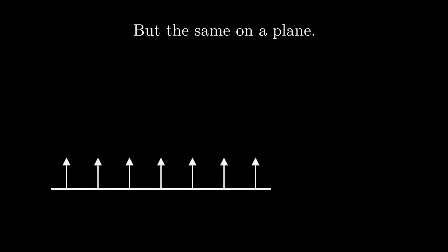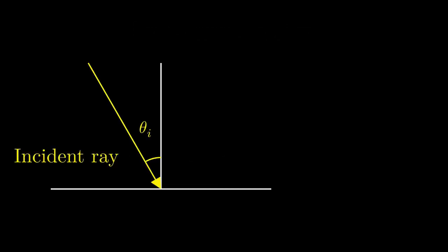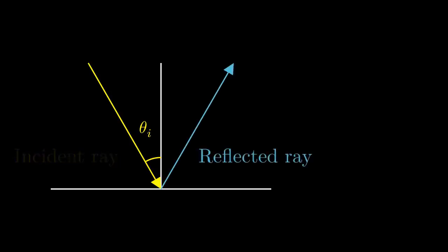This time though, we have only a flat mirror. The angle between the incident ray and the normal is called the angle of incidence. I write this angle's measure as theta i. The angle between the outgoing reflected ray and the normal is called the angle of reflection. I write this angle's measure as theta r.